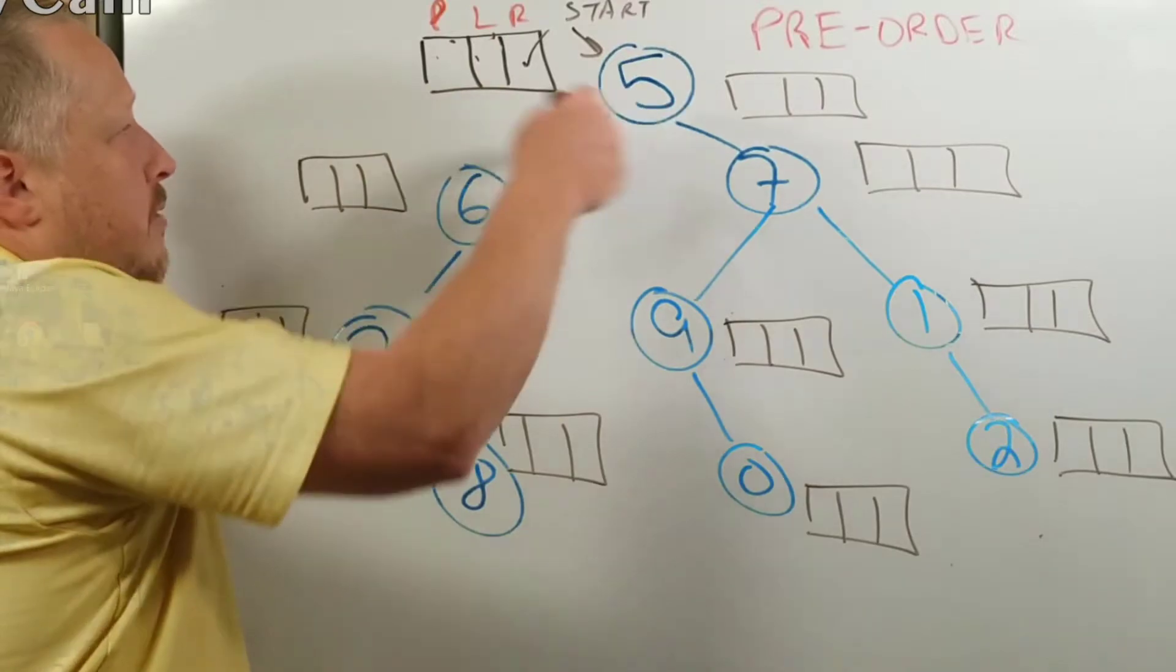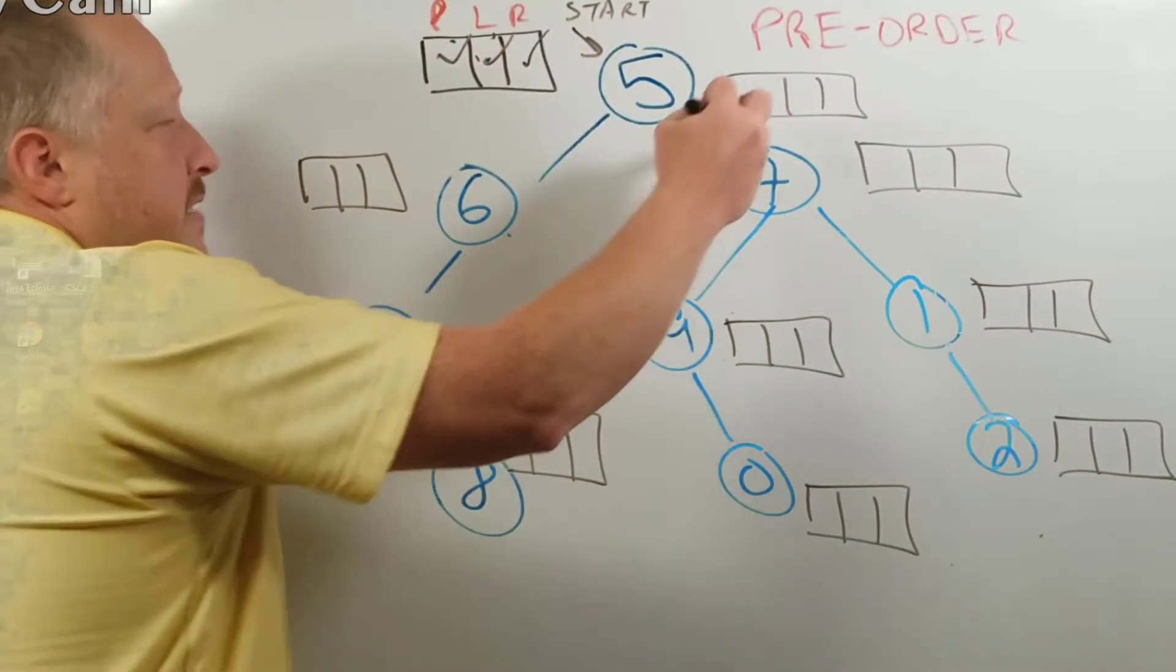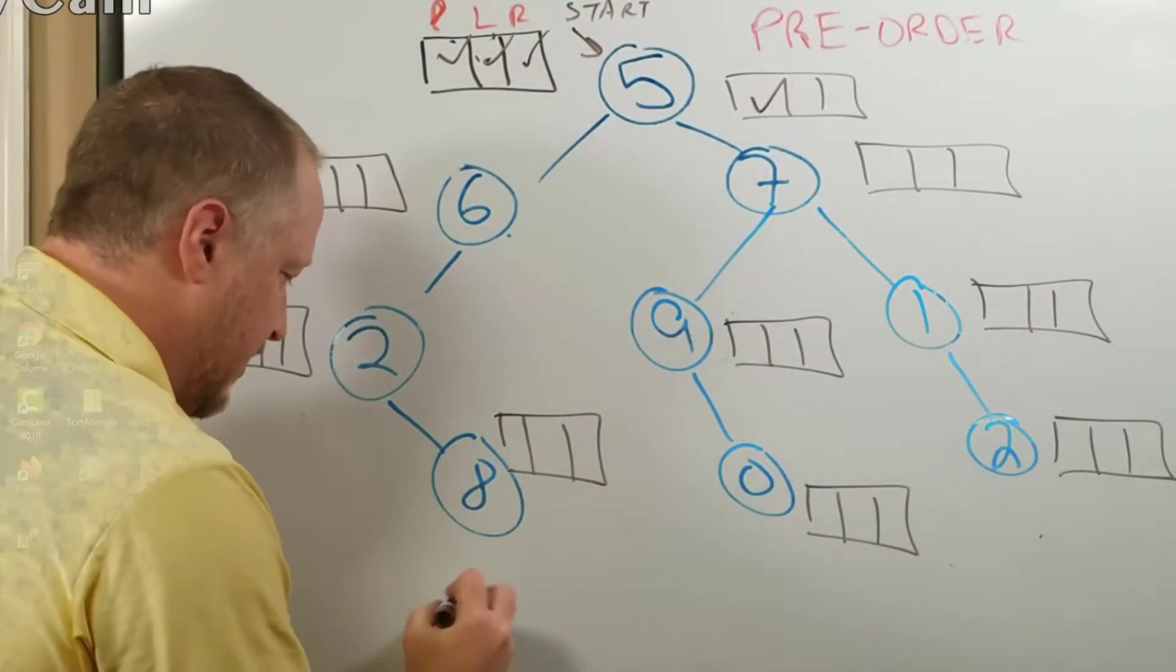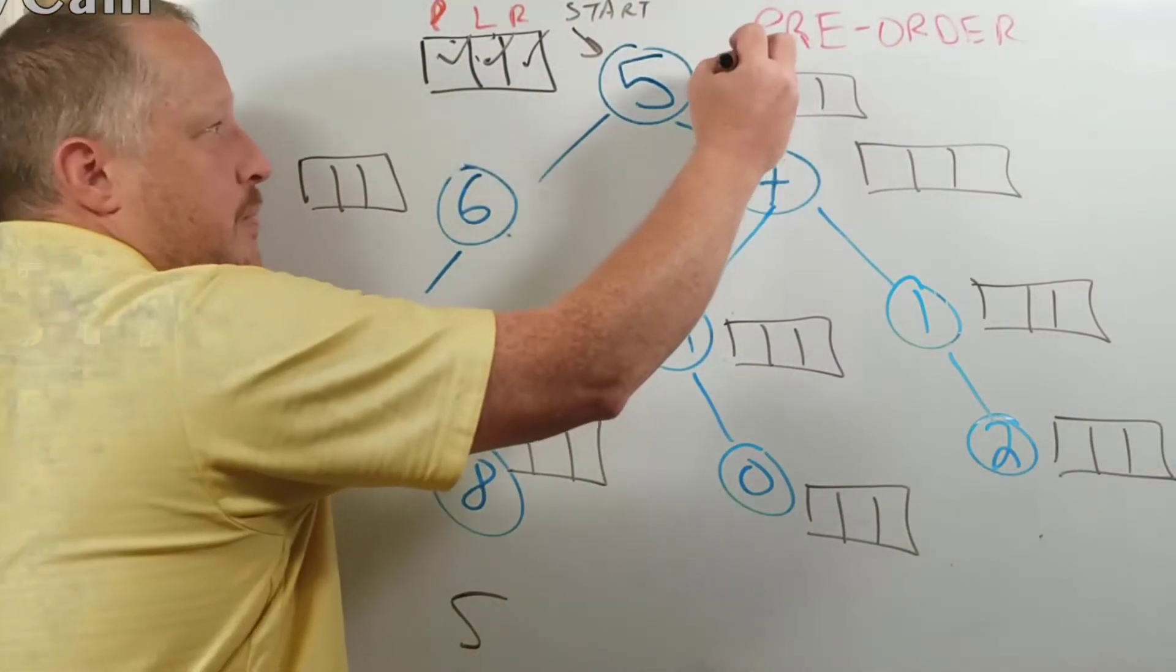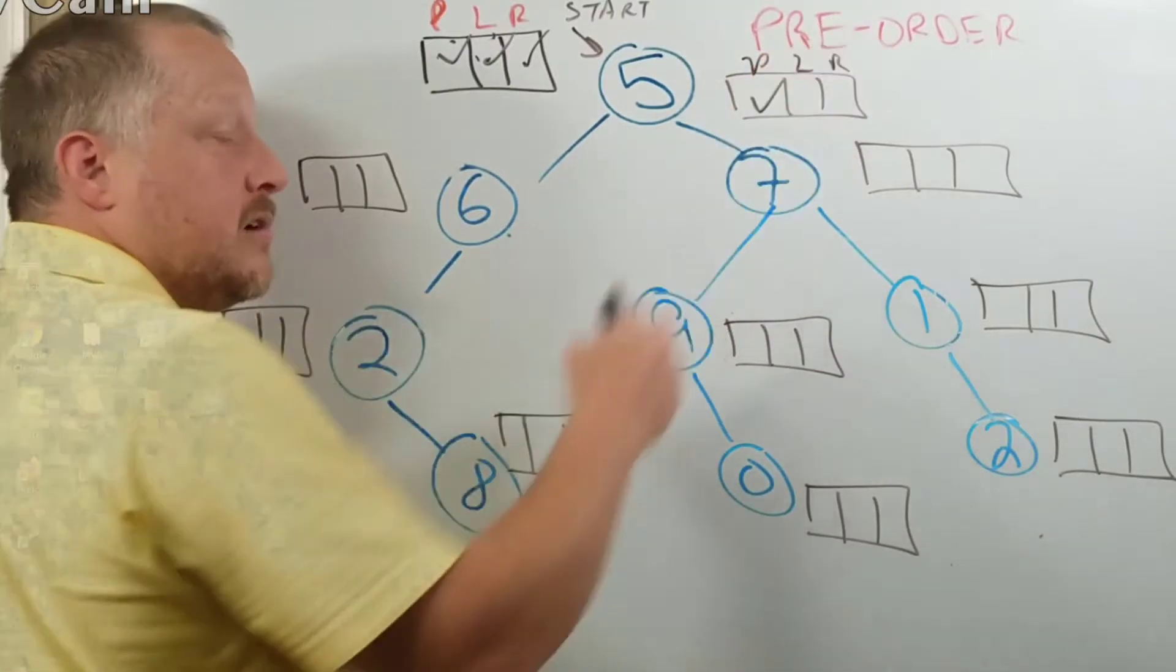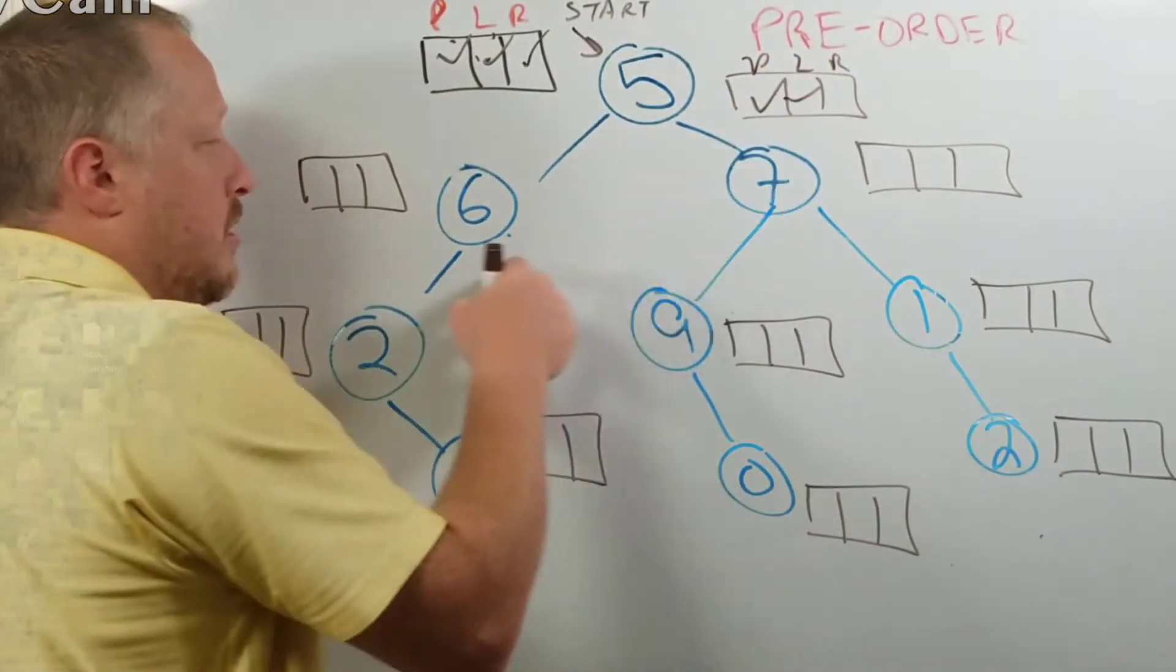And really, honestly, oh, I got it right there, so never mind. So five, I'm going to process. Then I'm going to go to the left. So think of this as a process left and right. So I'm going to go to the left, and that's six.